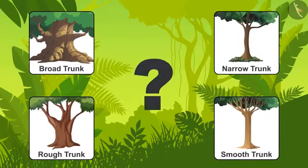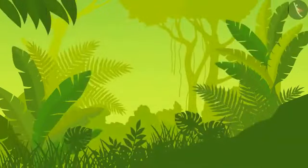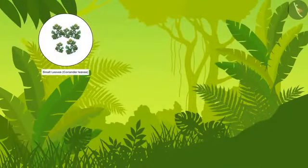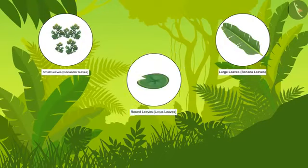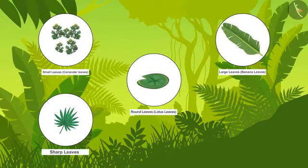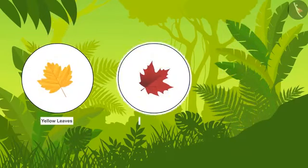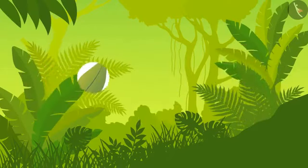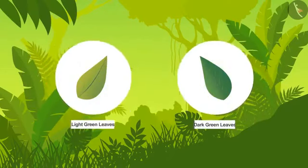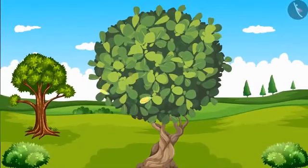What gives trees their green color? Their leaves! Let us now pay close attention to the leaves. Some leaves are small, like those of coriander. Some are large like the leaves of a banana plant. Some leaves are round like the leaves of a lotus plant. Some leaves are sharp like needles and some broad. Leaves come in many shades like yellow, red and purple, and the green of different leaves also ranges from light green to dark green. When leaves get old, they start turning yellow and eventually fall off the trees.